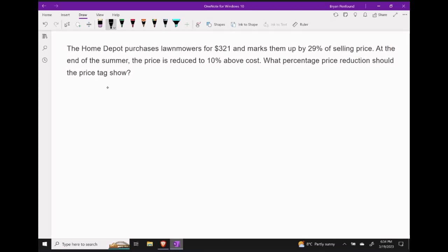Let's begin by noting that the $321 is the cost price. And what we're going to do in order to determine the selling price is to take our cost price of $321 and we need to mark it up by 29% of the selling price. So we actually need to take $321 and add to that 0.29 times S.